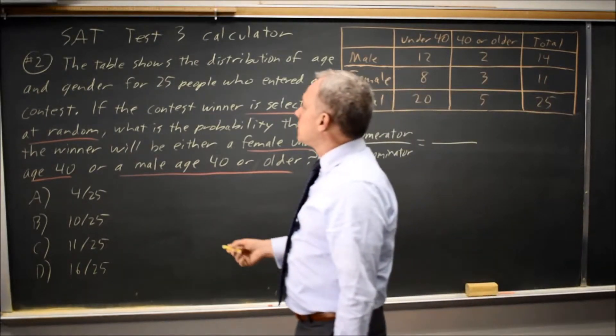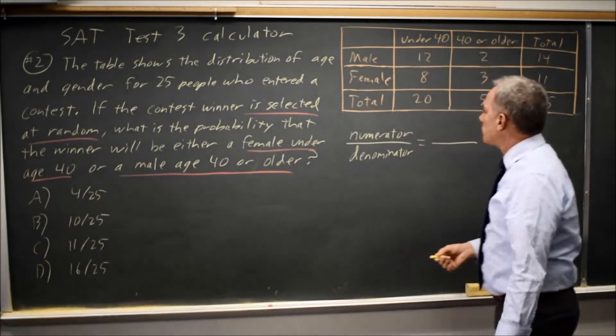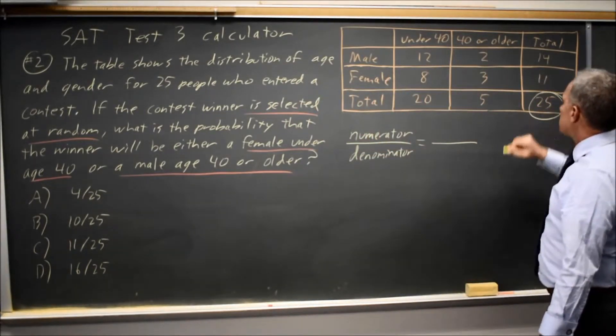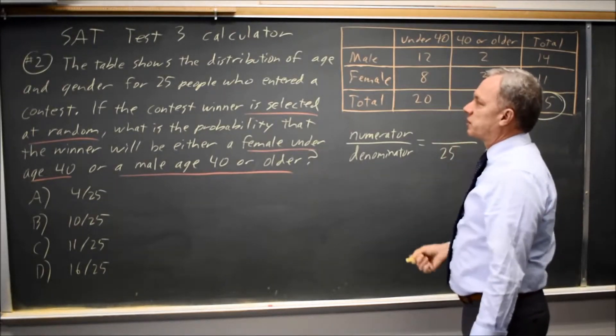In this case, they say if the contest winner is selected at random, there's no restriction on who could win, so the denominator of the individuals who could be selected would be all 25 who entered the contest.